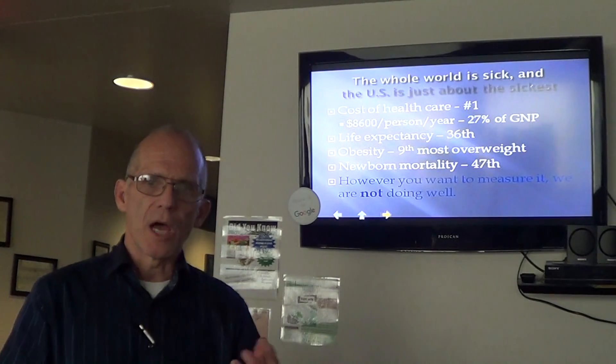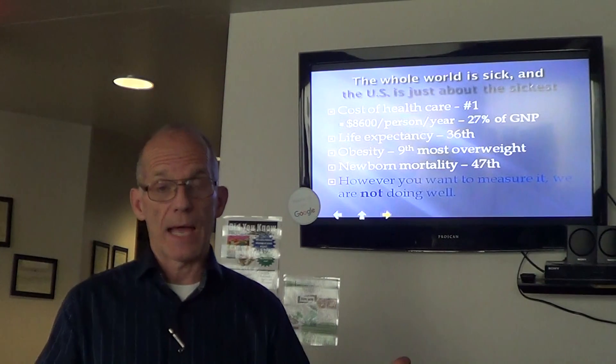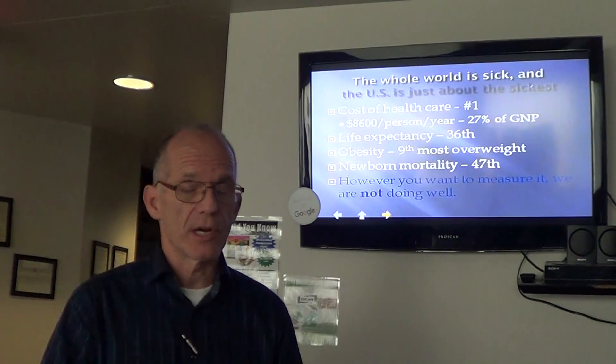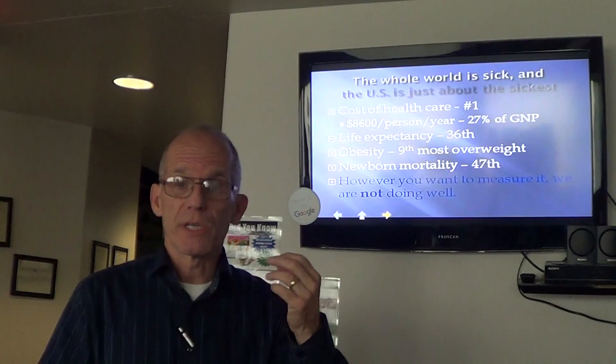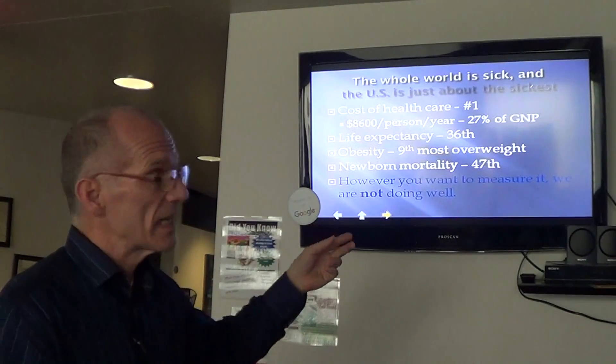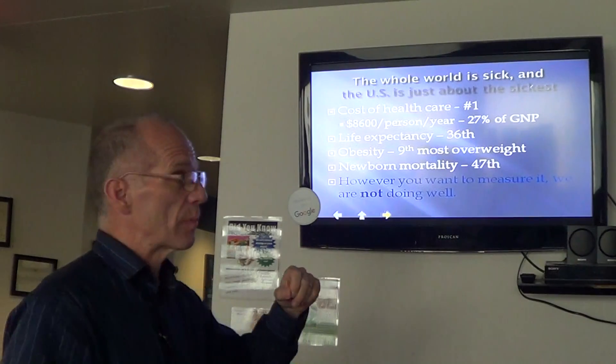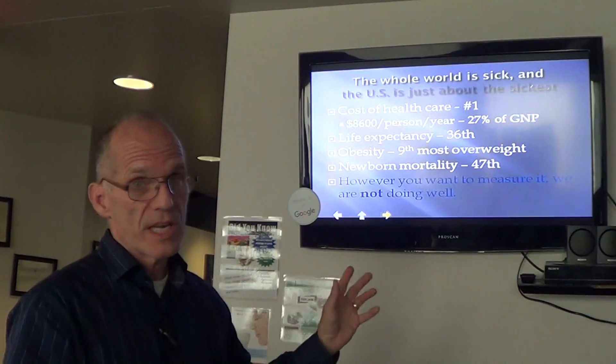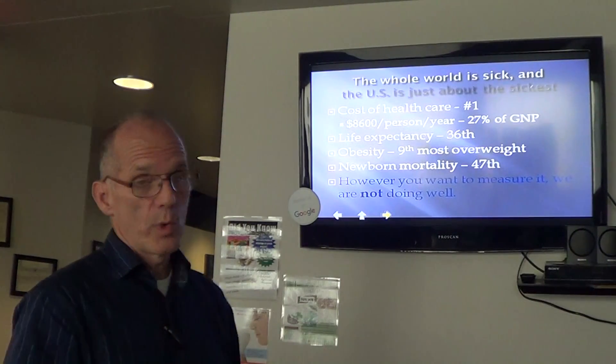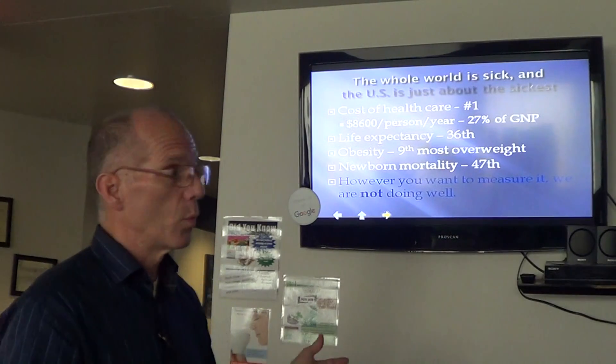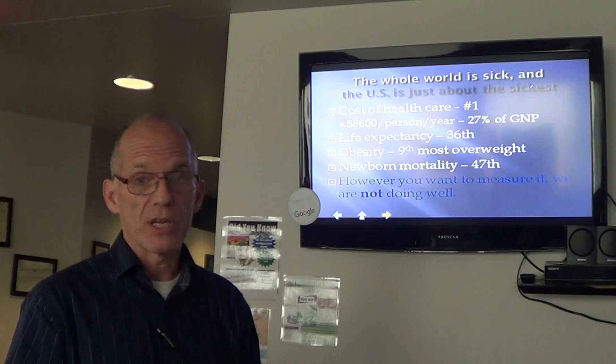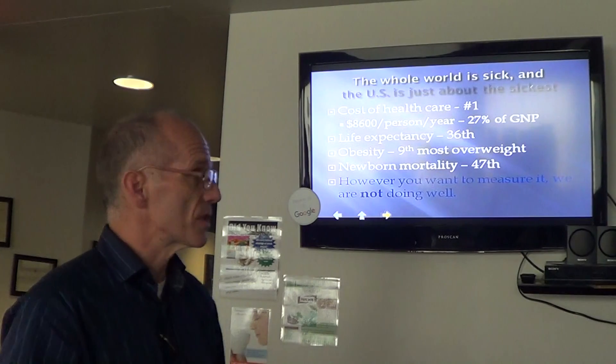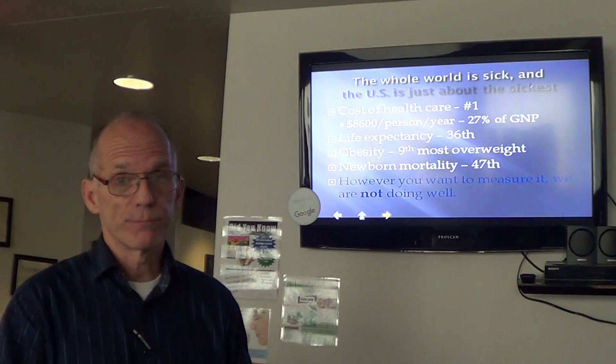Let's talk about the cost of being unhealthy for just a minute. It costs our nation a lot to deal with sickness. In fact, we spend more in the United States on health care, sickness care, than any country in the world. The average cost per person is $8,600 a year. That's a lot of money. It's actually 27% of our gross national product in the United States. And in spite of that, our life expectancy in the United States is only 36th in the world. Our obesity, we rank number 9 in the most overweight countries in the world. And our newborn mortality is 47th in the world. So in spite of spending a ton of money on health care, we still have pretty dismal statistics. That's pretty sad. No matter how you measure it, we're not doing great with that.